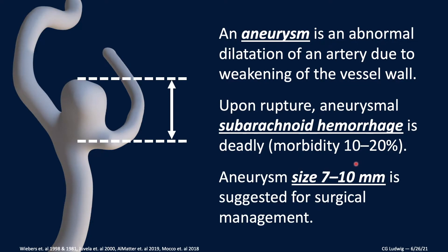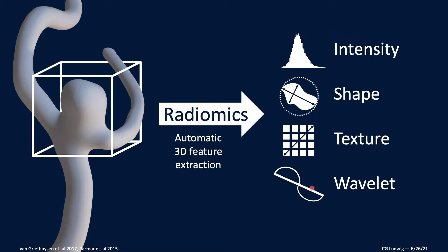When a patient presents with an asymptomatic, unruptured cerebral aneurysm, it's the size of the aneurysm that's the principal factor physicians use to make clinical management decisions. Generally, aneurysms that are 7 to 10 millimeters or greater are indicated for surgical management.